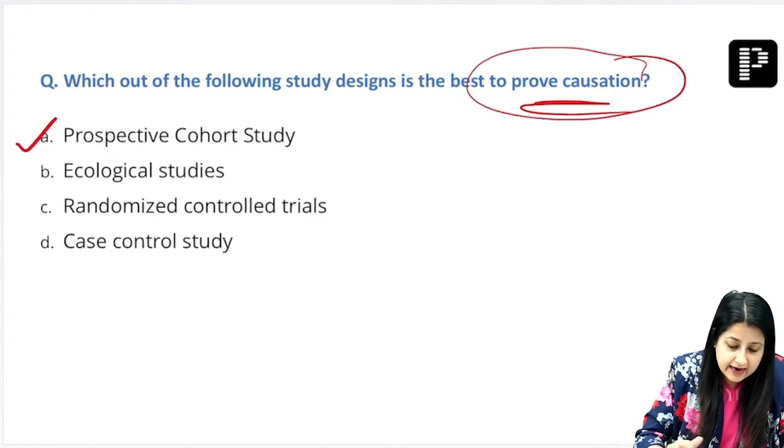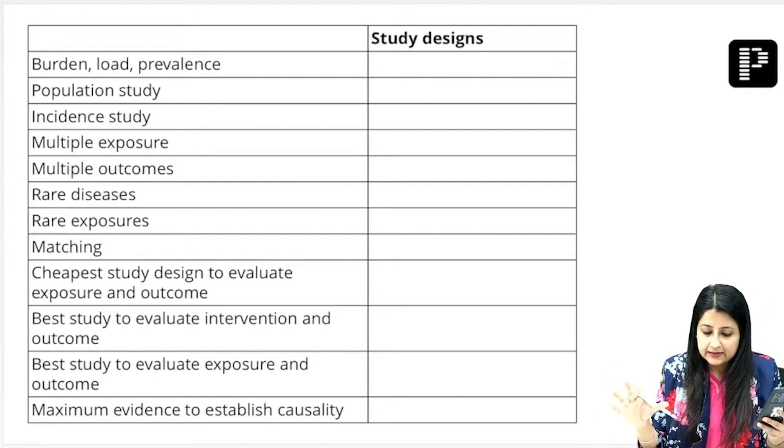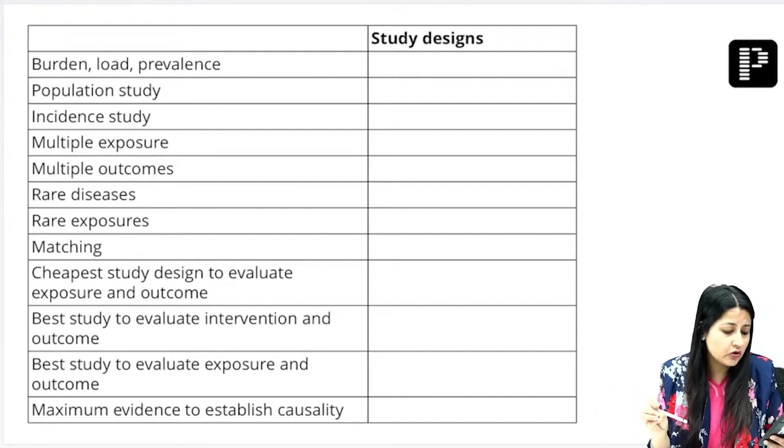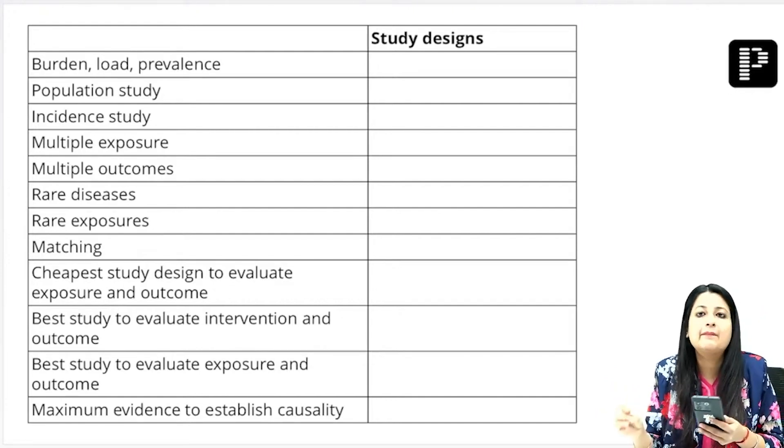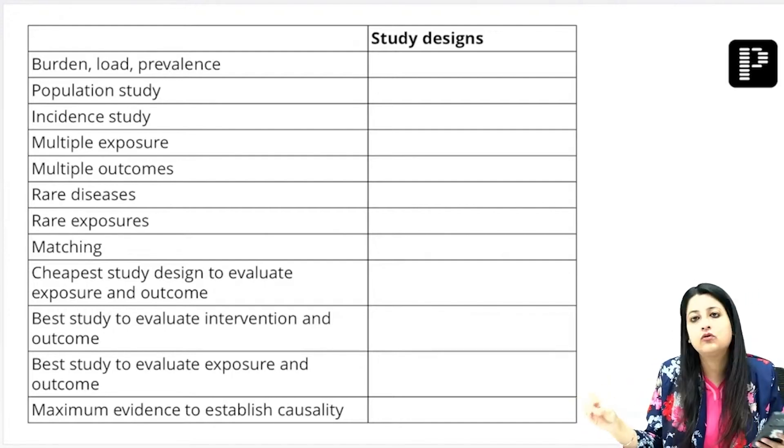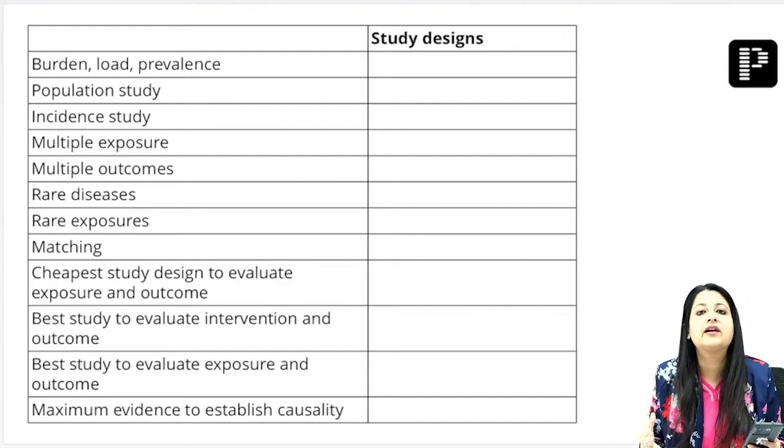I'm going to give you a few things from this table. Let us try to tell you why it is not RCT. Best to establish causation—that this is the cause of this—is a cohort study design. But if it was intervention, we would have gone for RCTs.